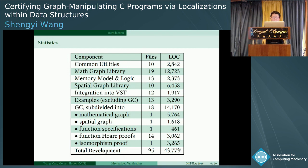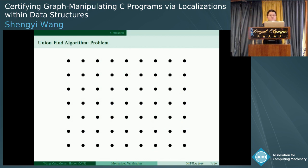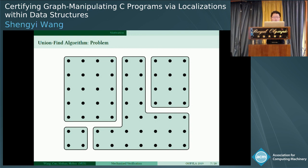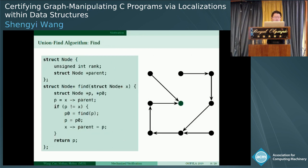It's spread into 18 files. You can see the math part, spatial parts, function specification. The whole development is about 43,000 lines of code definitions and proof scripts. Now let's take an example to illustrate our method. The union-find algorithm: The problem is classic. There are a bunch of elements. They belong to different sets. These sets are disjoint. Now given any two elements, how to judge they belong to the same set or not? If they belong to different sets, how to merge two sets efficiently? To solve this problem, computer scientists invented very smart data structure and algorithms.